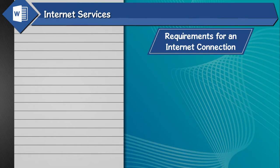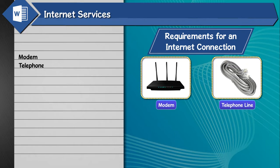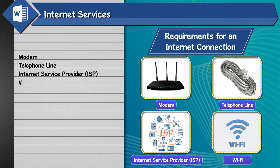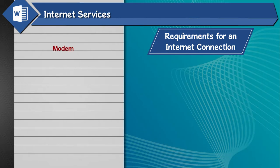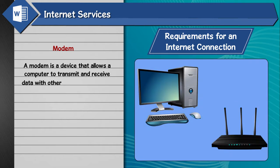Requirements for an Internet Connection: Modem, Telephone Line, Internet Service Provider (ISP), and Wi-Fi. A modem is a device that allows a computer to transmit and receive data with other computers. Modem stands for Modulator Demodulator.